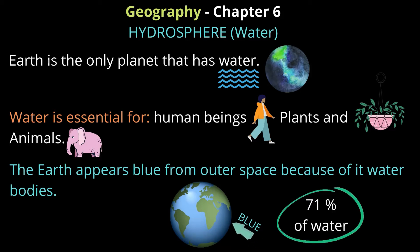Earth has liquid water on it. Why do we need water? Water is important. It is essential for human beings, plants, and animals. What will happen to plants if we don't water them? They will die. We need water.